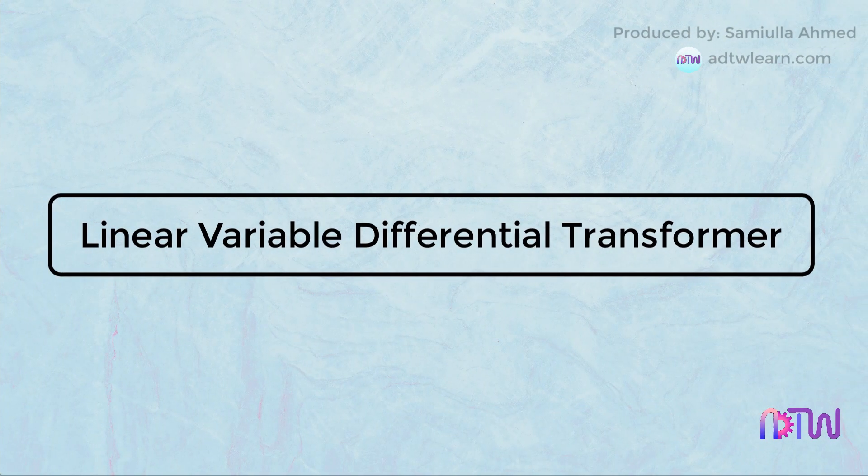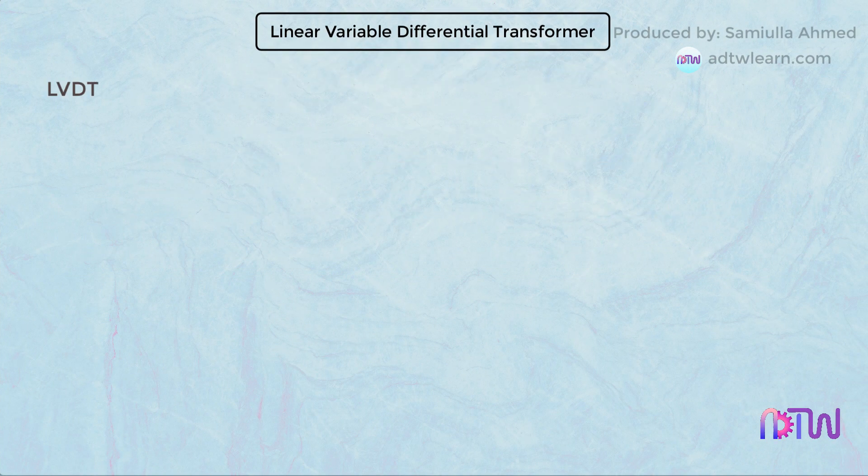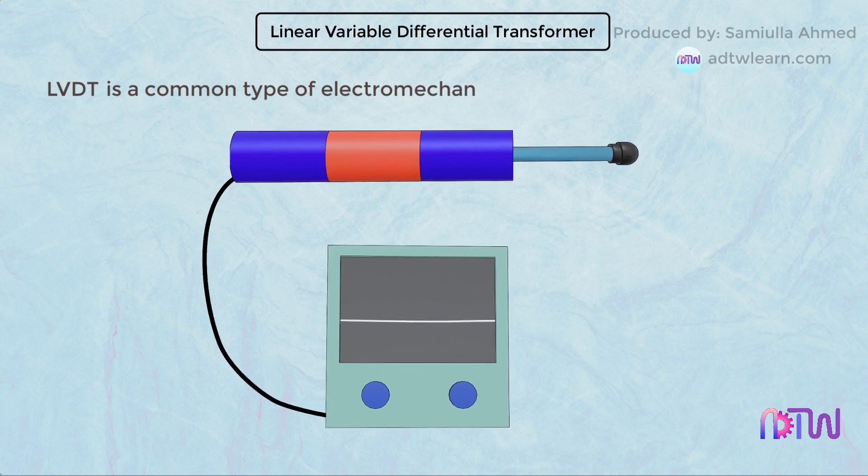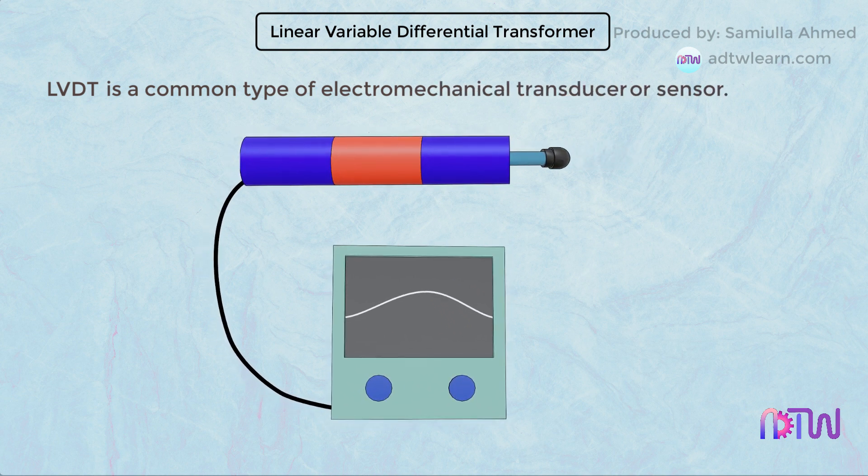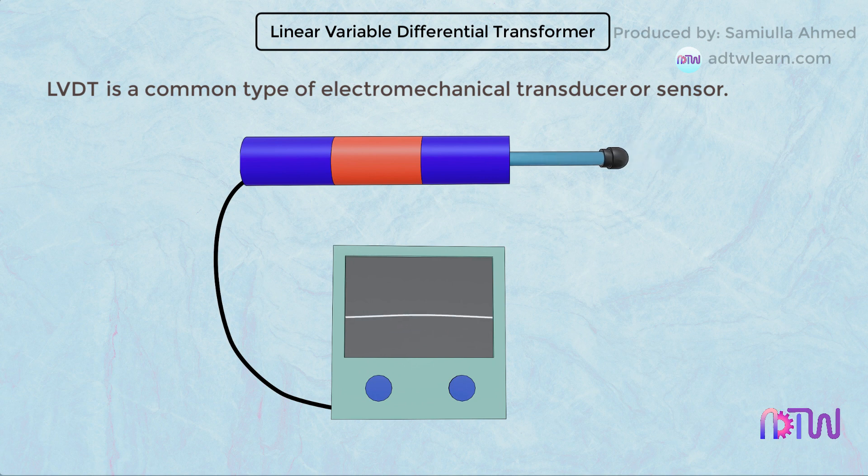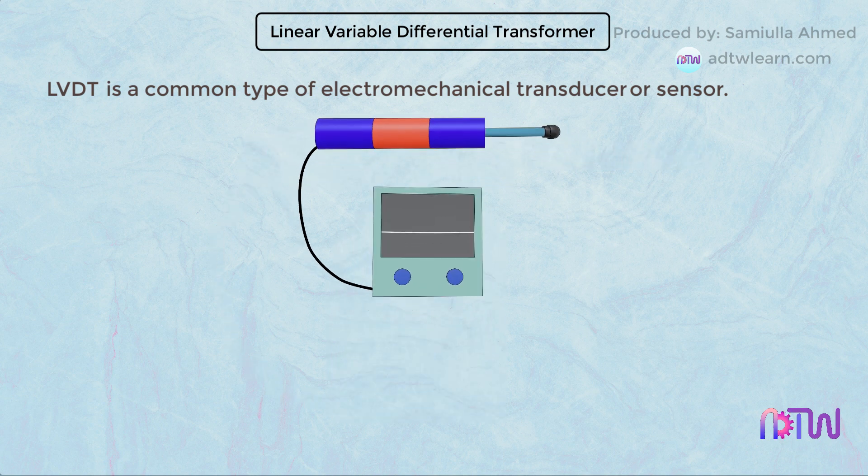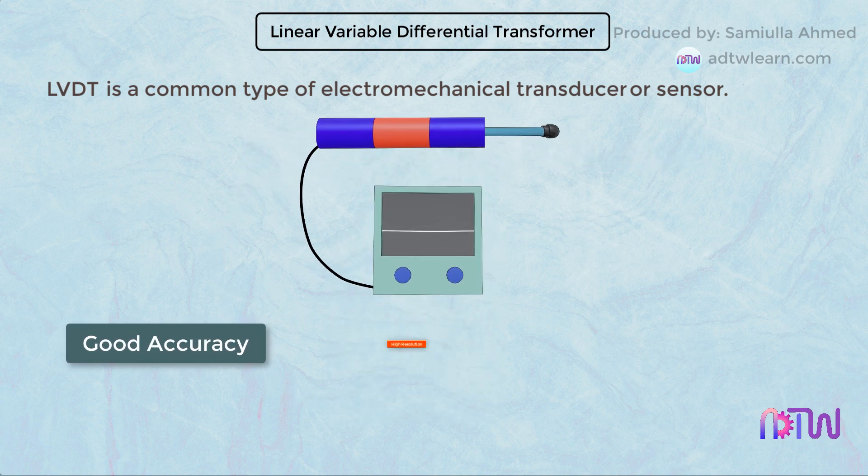Linear Variable Differential Transformer (LVDT) is a common type of electromechanical transducer or sensor which is used to convert the linear motion of an object to which it is attached into a proportional electrical signal. LVDT offers good accuracy, high resolution, good sensitivity, and relatively zero mechanical friction, which makes it a preferable sensor for measuring linear displacement.